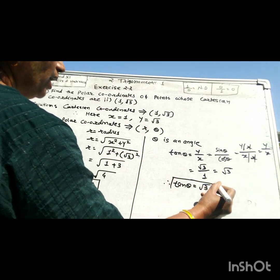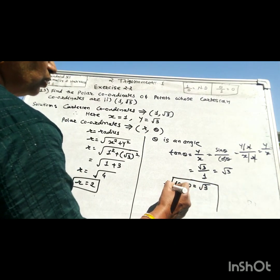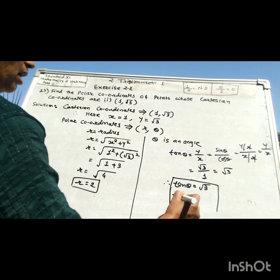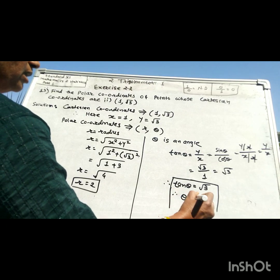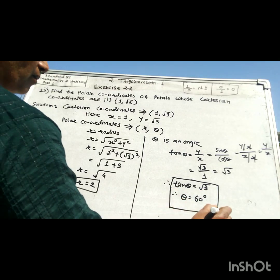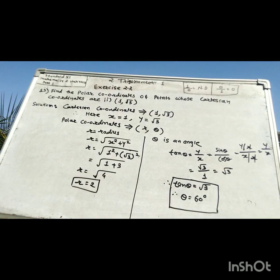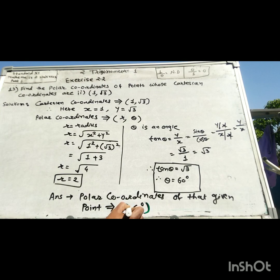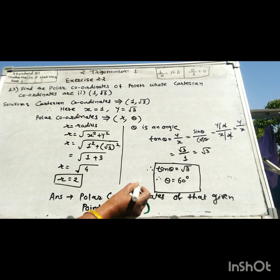When tan theta is root 3, the angle is 60 degrees. So 2 and 60 degrees are the polar coordinates of the given point.